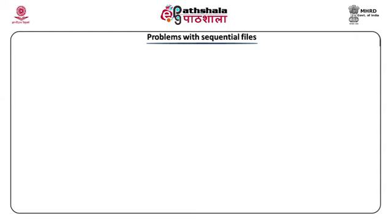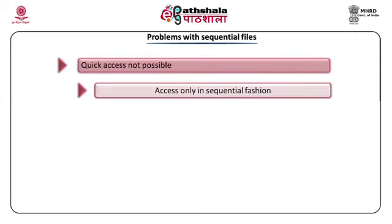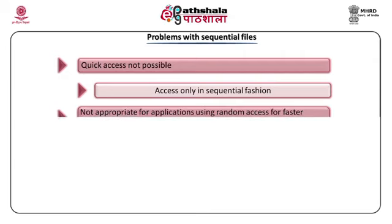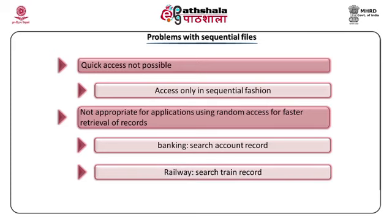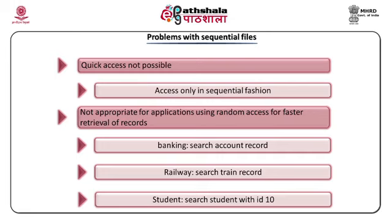What are the problems with sequential files? Whenever we read or write a file sequentially, I cannot have random access — if I want to go directly to the eighth record, I cannot do so unless I have read the first seven records in sequence. This type of access is not appropriate when we want faster access. For example, to update the marks of student number eight, it is better to go directly to the eighth record instead of unnecessarily reading the first seven. This provides faster access, and wherever quick access is required, we should use random access.